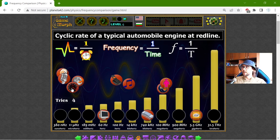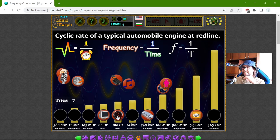Cycle rate of typical automobile engine at the red line. Okay, this is when we force the engine. I think it was somewhere here. Ah no. This is 100 Hz, not a lot.